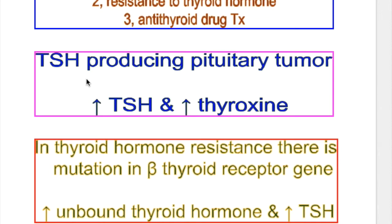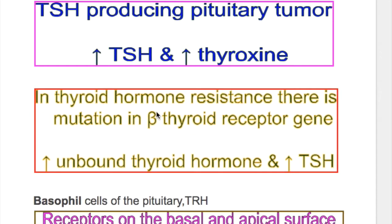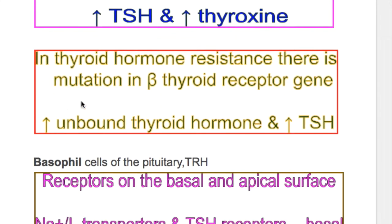In a TSH-producing pituitary tumor, there is increased TSH and increased thyroxine. In thyroid hormone resistance, there is a mutation in the beta-thyroid receptor gene, and in that case both unbound thyroid hormone and TSH are increased.